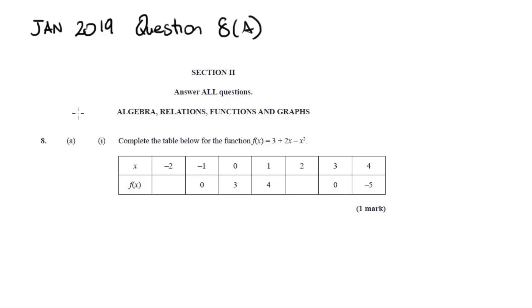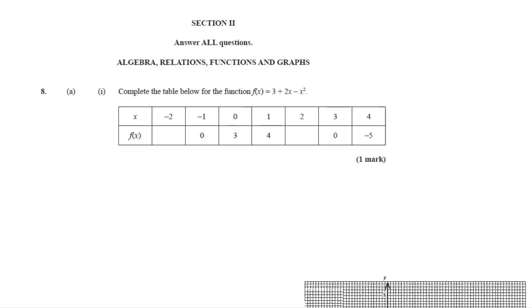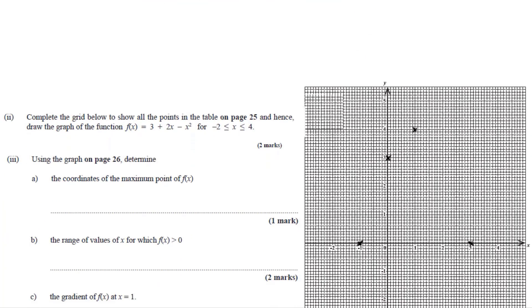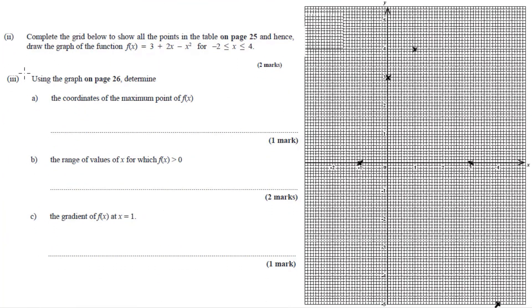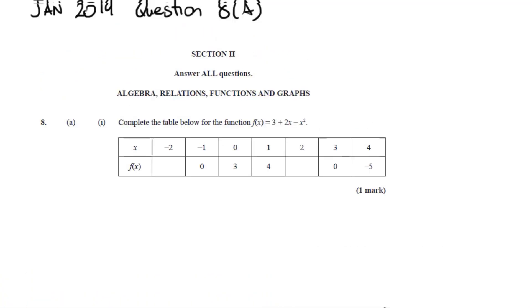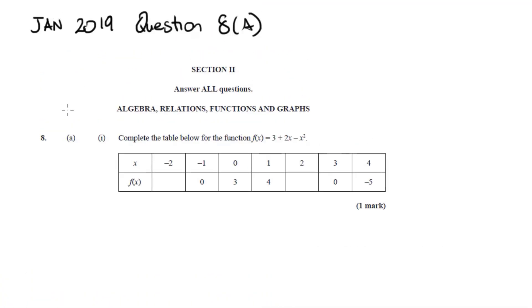This is the January 2019 Question 8a. In this question you are going to complete a table for the function, draw the graph, and then use that to determine the coordinates of the maximum point, the range of values of x for which f(x) is greater than zero, and the gradient of f(x) at a point.